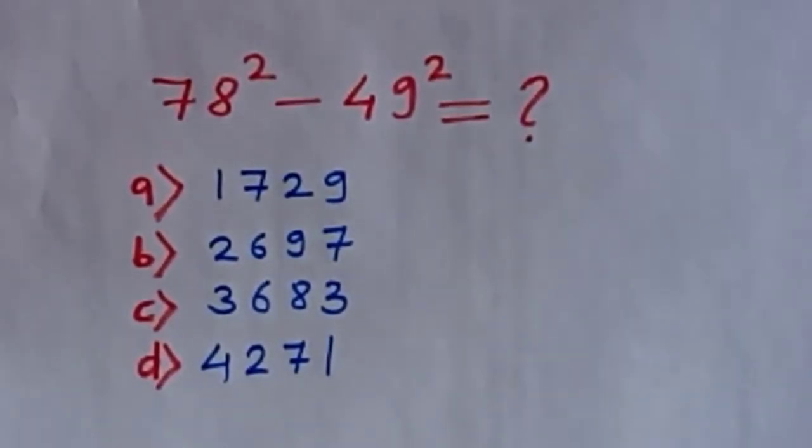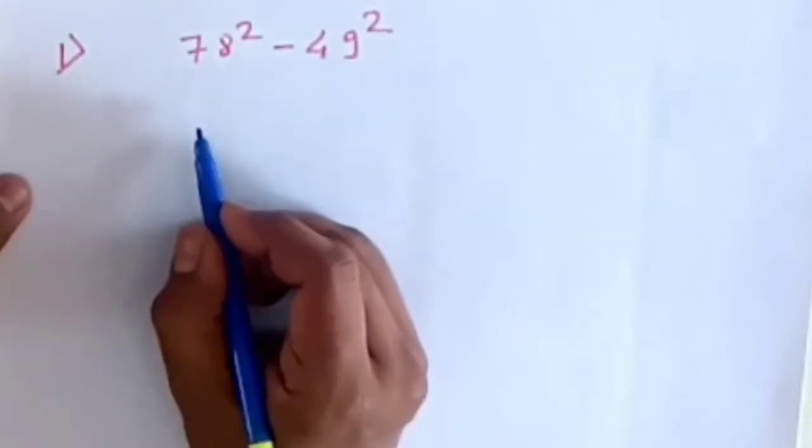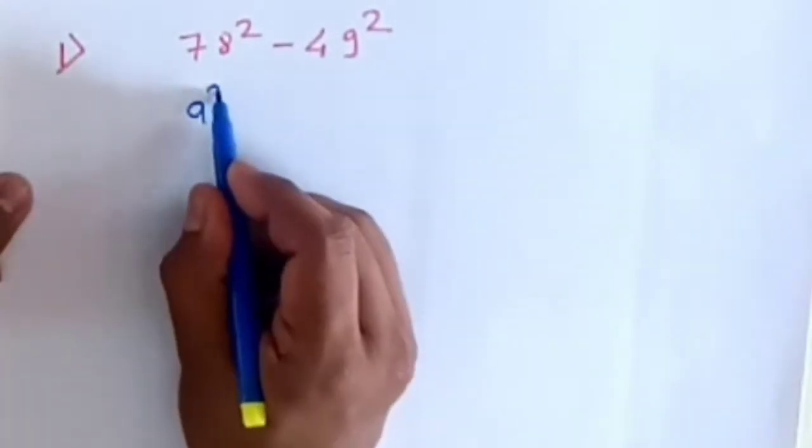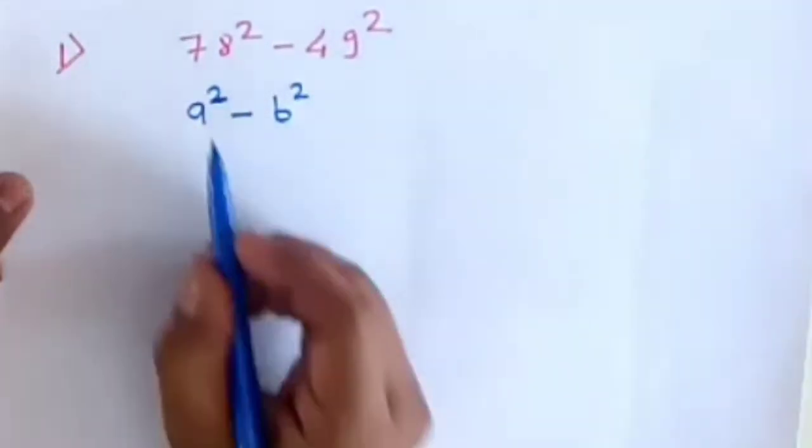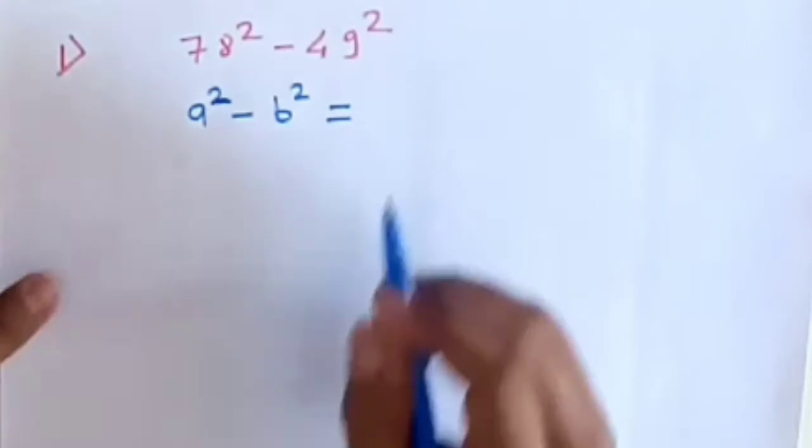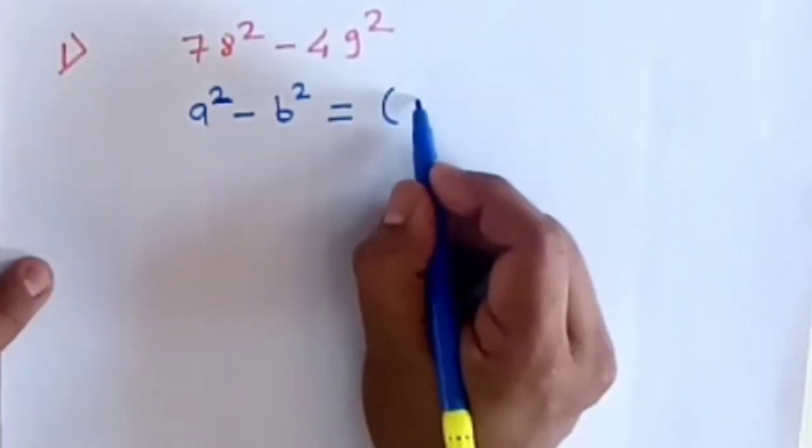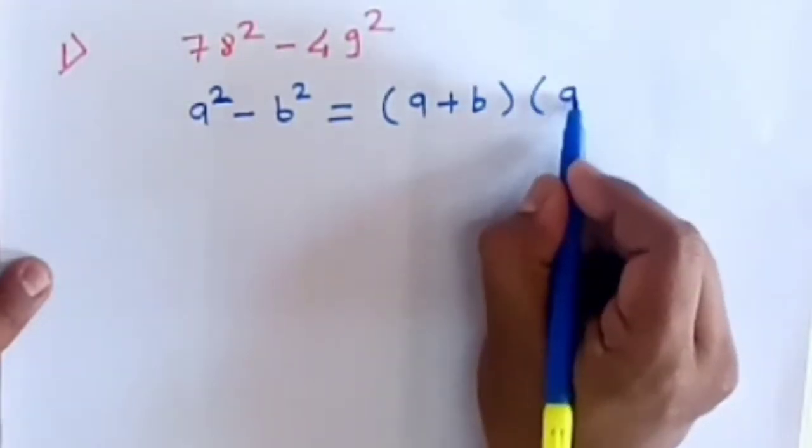First we will write this problem then we are going to solve it. The first step is that you have to remember this formula: a² - b². Formulas are very important keys for success in the mathematics field. So a² - b² equals, in bracket, a + b, in another bracket, a - b.